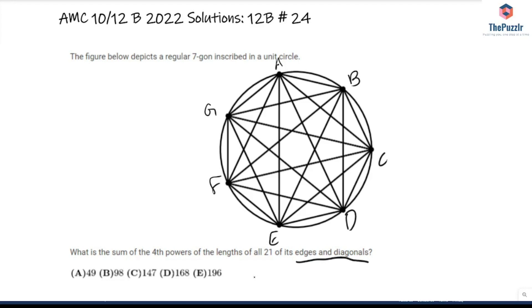Now whenever you see a problem like this, you'll notice that a lot of the diagonals are going to be the same. In fact, all the edges are the same. So we're not actually going to find all 21 lengths. Let's see how many we actually have to find. So we have this edge AB, and there's 7 of those edges.